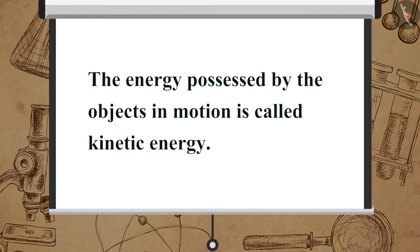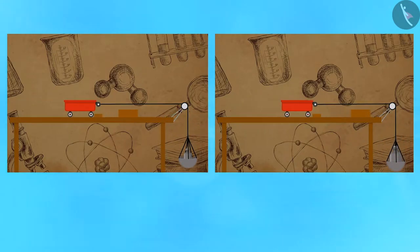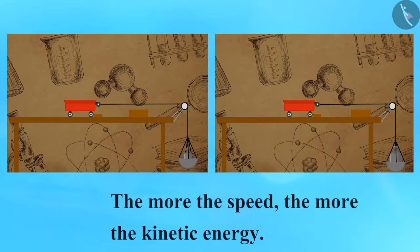The energy possessed by the objects in motion is called kinetic energy. Therefore kinetic energy can be defined as the energy possessed by an object by virtue of its motion. The more the speed, the more the kinetic energy.